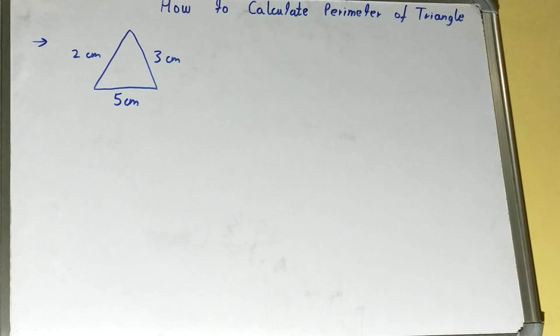Whenever we are finding out the perimeter of a triangle, it doesn't matter whether a triangle is a scalene triangle, whether it is an equilateral triangle where all the sides are equal. It doesn't matter.